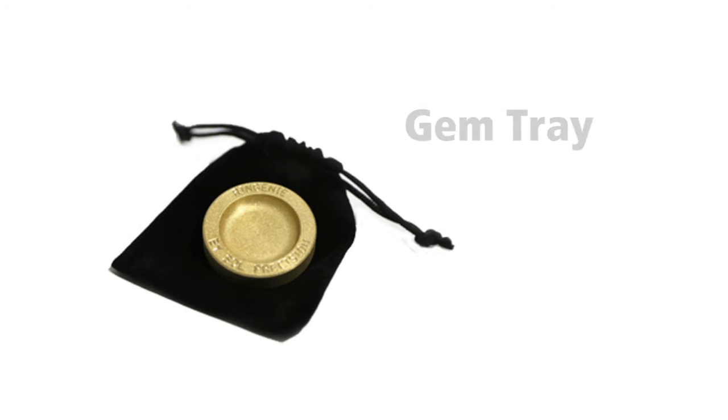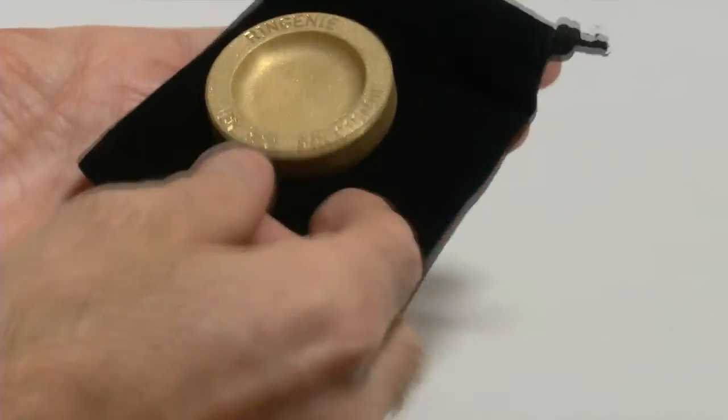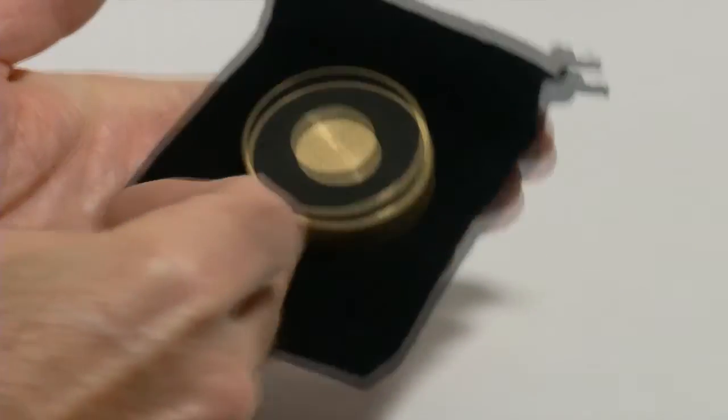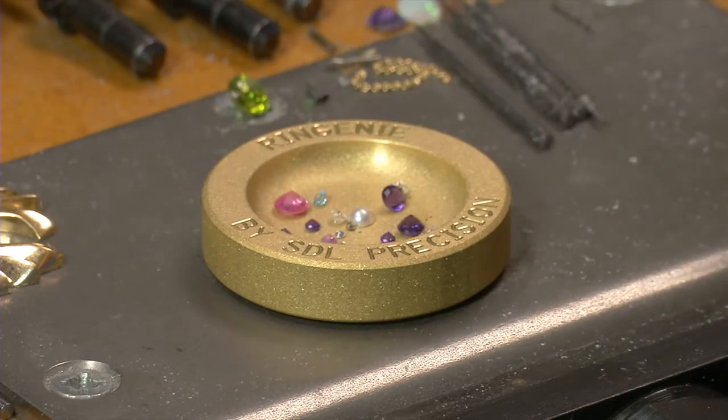Now, let's take a closer look at the gem tray. It comes in a black velvet pouch and is made of solid brass with a matte finish. Its rubber non-slip bottom and heavy weight keep it securely in place. Jewelers who work with stones will find it invaluable.